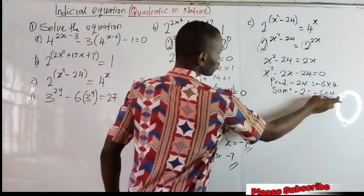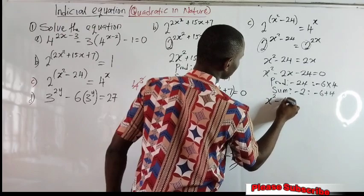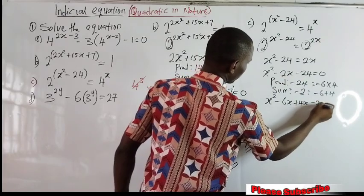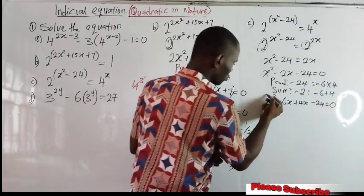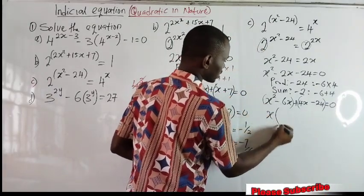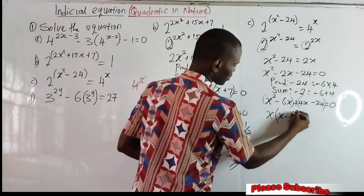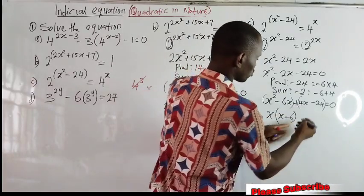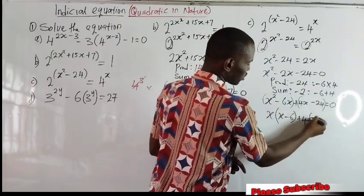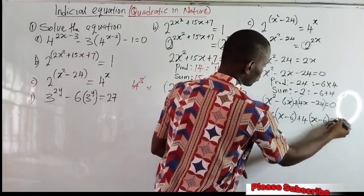Substitute minus 6 and 4 into the equation. We have: x squared minus 6x plus 4x minus 24 equal to 0. We group: x is common in the first two terms — x divides x squared giving x, and x divides 6x giving 6. Then 4 is common in the last two terms — 4 divides 4x giving x, and 4 divides minus 24 giving minus 6, equal to 0.